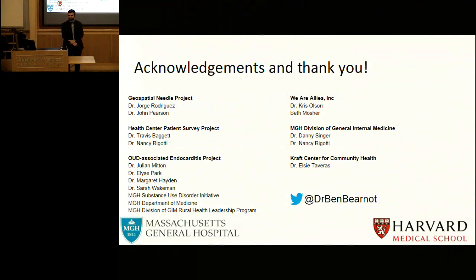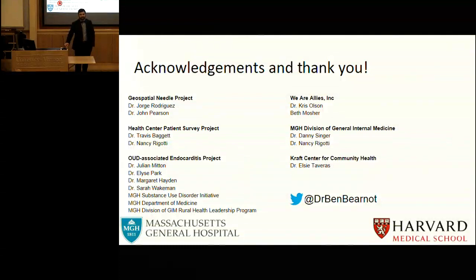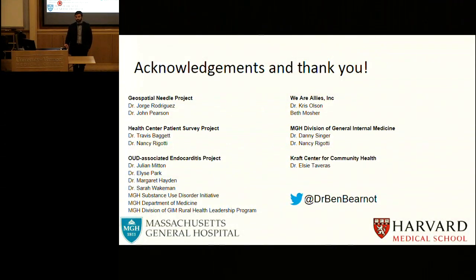A question from the audience: in the early slides, overdose with opiates was shown as the number one cause of death — but that must be in a younger age group, since across all ages heart disease and cancer dominate, right? Correct — this is the leading cause of accidental death in the United States. These are otherwise young and healthy people losing a lot of life, which is where the real burden lies in terms of quality-adjusted life years.